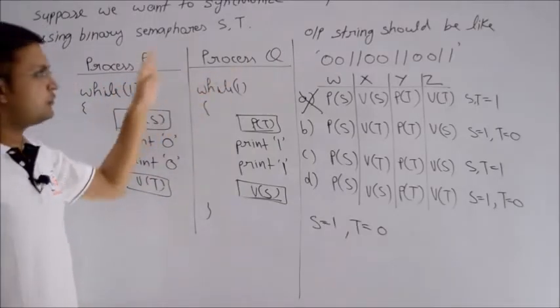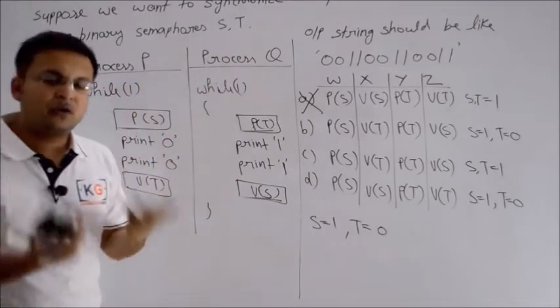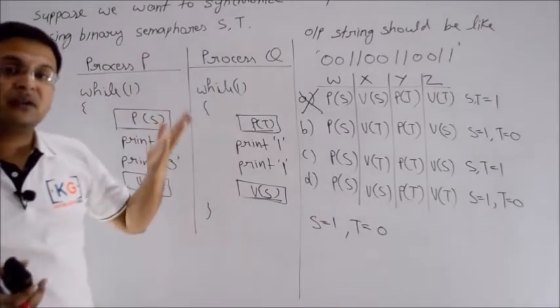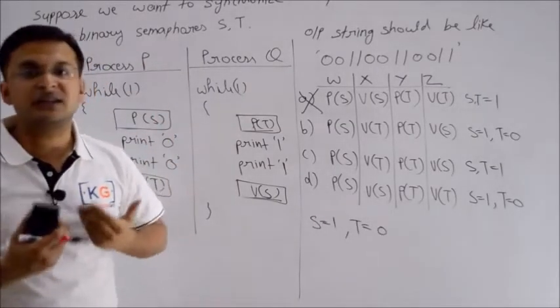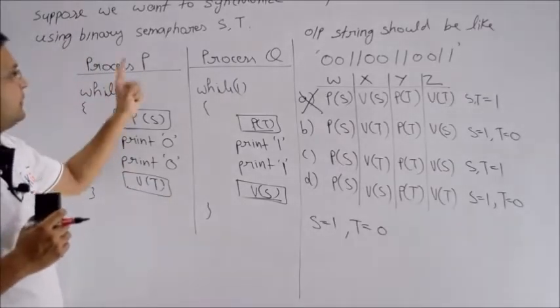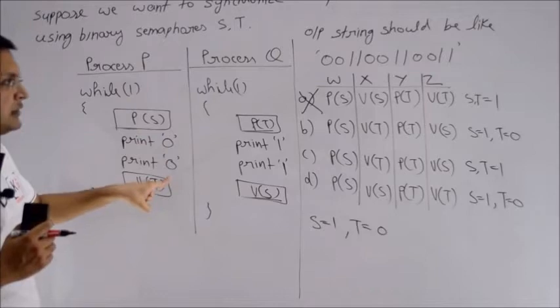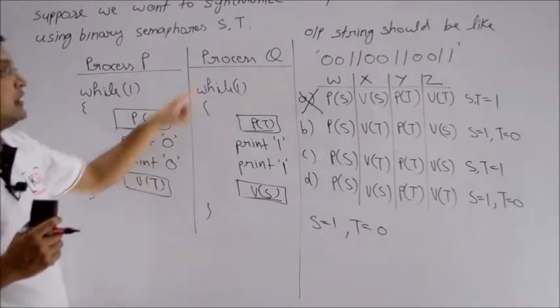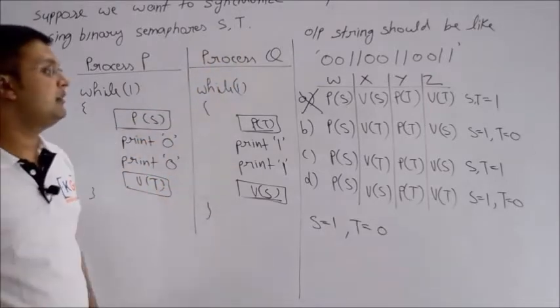Can we initiate with P? P of S - S's value is 1, so we can. But I want to prove it's wrong by trying to print 1 instead of 0. Process Q can print 1, but Q says P of T. The problem is T's value is already 0. According to the operating system, you can give charge to anyone, but let me try different cases.